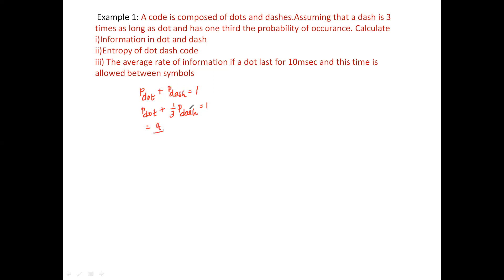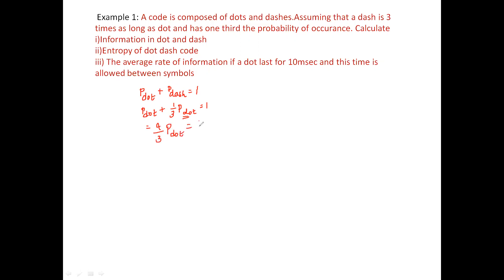So P(dot) plus one-third P(dot) equals 1, giving us four-thirds of P(dot) equals 1. Therefore, probability of dot is 3/4 and probability of dash is 1/4. The total probability equals 1. Now that we have the probabilities of dot and dash, we can easily solve the first two sections of the problem.